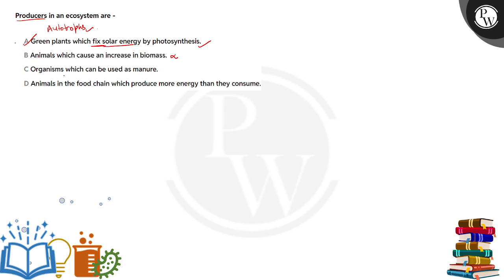Let's read the other options. Organisms which can be used as manure, wrong. Animals in the food chain which produce more energy than they consume, again wrong. Only option A is making sense. So the right answer is option A. I hope it is clear, thank you.